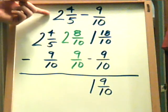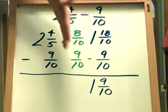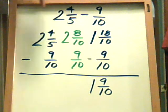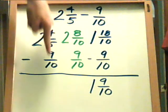So if you notice, the problem is written like this: 2 and 4 fifths minus 9 tenths. In addition and subtraction, you want to set your problem up vertically. So the first thing we do is just this, 2 and 4 fifths minus 9 tenths. Notice the fractions are right above the other.